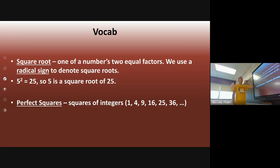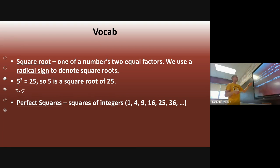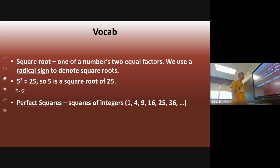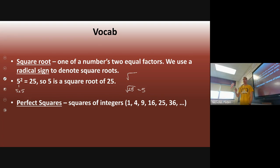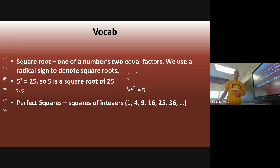A square root of a number is two equal factors. Five squared is five times five because they are equal factors — the same number multiplied together. Five squared equals 25, so five is a square root of 25. We use what's called a radical sign to denote square roots. The square root of 25 equals five, because five times five equals 25. Notice you are not dividing by two — you have to figure out what number times itself equals 25.